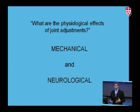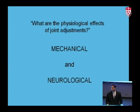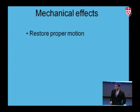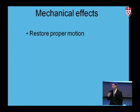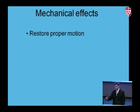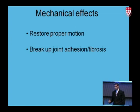It's a mechanical therapy so we expect mechanical effects. To be more specific, we can talk about the simple restoration of joint motion. Someone who has a lack of range of motion, diminished range of motion, muscle stiffness, etc. Chiropractic has been shown to be able to restore proper motion both in the acute phases and also in the chronic phases.